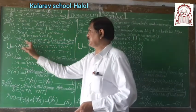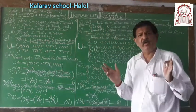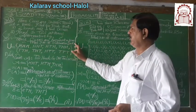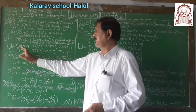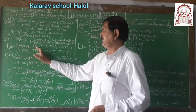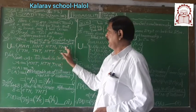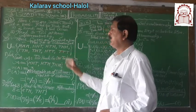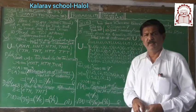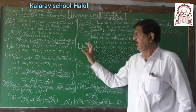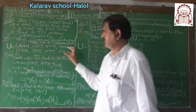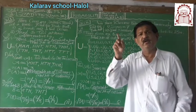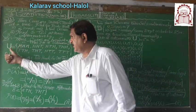Now if 3 coins are tossed at a time, the total outcomes are 2 raised to 3 equal to 8. What are the 8 outcomes? HHH, HHT, HTH, THH, TTH, THT, HTT, and TTT. The total number of outcomes is known as sample space or universal set, denoted by U or S.